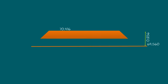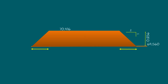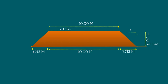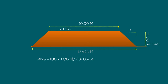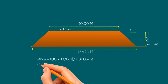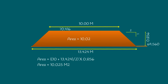Now let us draw the cross-section of the embankment with a side slope ratio of 2 to 1, and derive the bottom width and area. The embankment height is 0.856, and with a slope ratio of 2, the width of the slope is 1.712 meters. The total bottom width is 10 plus 1.712 plus 1.712, equals 13.424 meters. Using the trapezoidal formula, the area is (10 plus 13.424) divided by 2, into 0.856, equals 10.025 square meters.